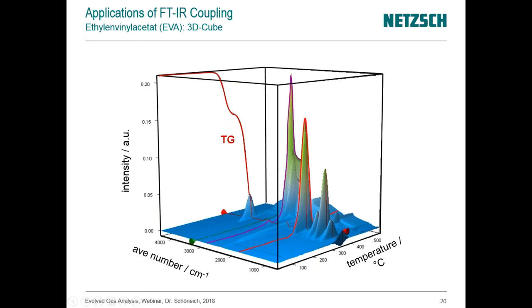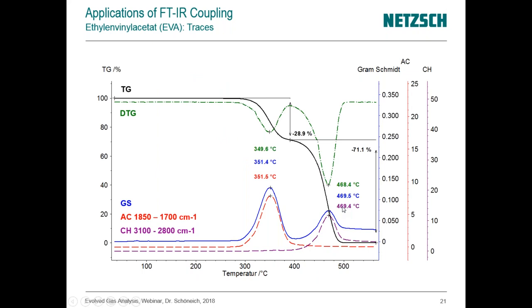We can also cut the 3D cube along certain wavenumber ranges along the temperature axis to produce extracted traces. Comparing these against the Gram-Schmidt signal, we get two additional traces: one for the absorption bands of acetic acid (red) and one for the absorption bands of hydrocarbon molecules (purple). The FTIR response in the first step corresponds only to acetic acid bands, while the second step shows only hydrocarbon bands — confirming what each mass loss step refers to, and the TG quantifies the amounts.